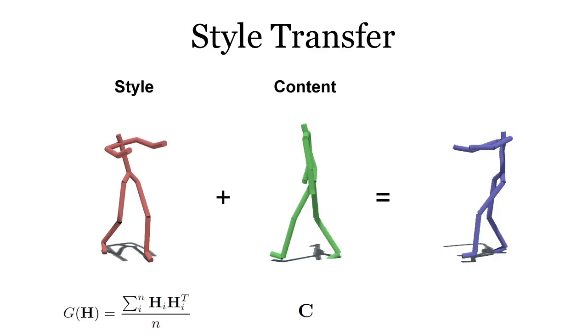Very high-level abstract motion edits can also be specified. By constraining the Gram matrix of the hidden units, we can construct motion with the style of one motion and the timing of another. This allows us to perform style transfer without any alignment of the two motions. Here are some of our results.